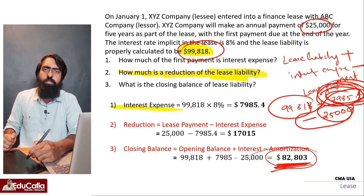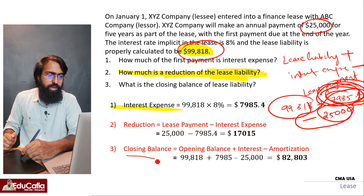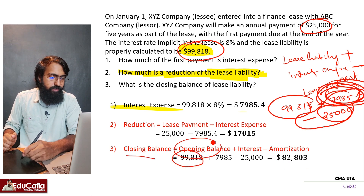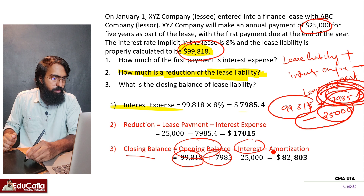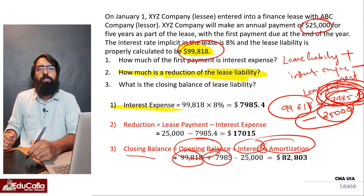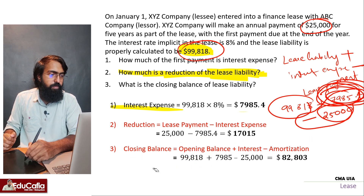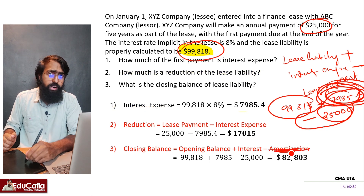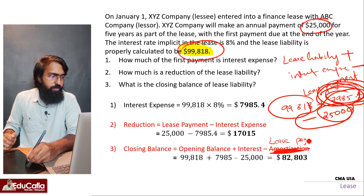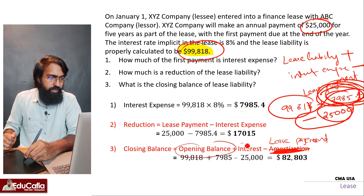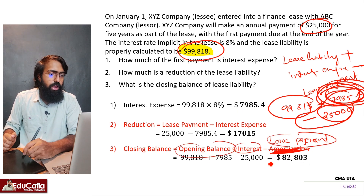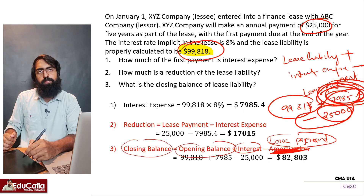The closing balance formula is: opening balance plus interest minus lease payment. So the amortization — actually it's not amortization, it's the lease payment. Opening balance plus interest minus lease payment gives us the closing balance. Is that clear?